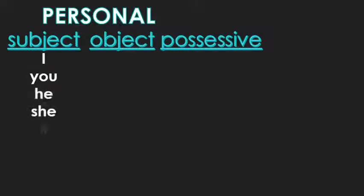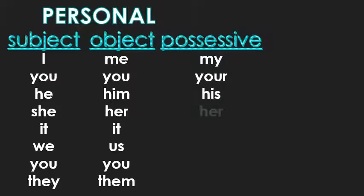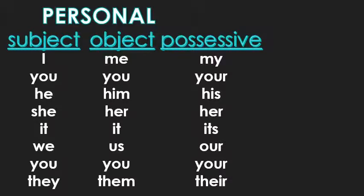Your subject personal pronouns are: I, you, he, she, it, we, you, they. The object pronouns are a little different — I becomes me, you stays you, he becomes him, she becomes her, it stays it, we becomes us, you stays you, and they becomes them. Then there's the possessive ones: my, your, his, her, its, our, your, their.